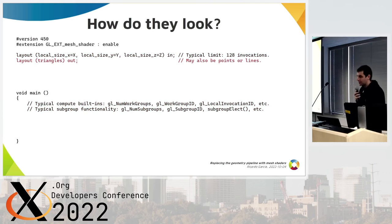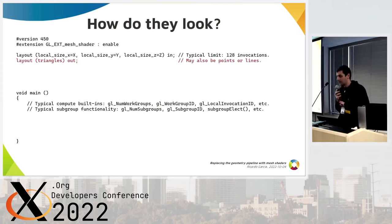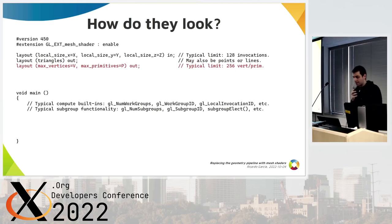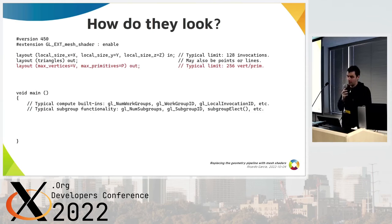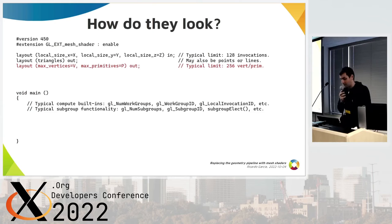Mesh shaders also have to generate geometry. The output type cannot be chosen at runtime — when writing a shader, you have to decide if it will output triangles, lines, or points, and declare that in the shader. You must also indicate an upper limit on the number of vertices and primitives each work group will generate. In practice, several implementations will limit you to 256 vertices and primitives at most, which is the minimum required limit according to the specification. To handle big meshes, you'll need several work groups, each handling a piece of the whole mesh. Local invocations in each work group cooperate to generate arrays of vertex and primitive data.